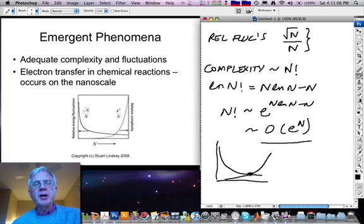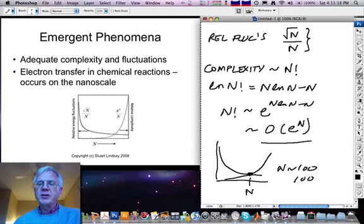Now it turns out that if you look at a problem on the energy scale of electron transfer in chemistry, the n that matters is something like a hundred to a thousand atoms or molecules. Now when the system is both fluctuating enough but also complex enough, very rare configurations of the system can cause new things to happen.